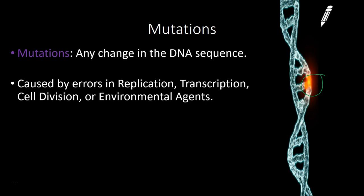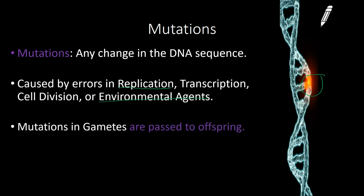It's common for mutations to occur during replication, transcription, and cell division. There are also environmental factors that could cause mutations, such as chemicals or sunlight, which can cause mutations in your skin cells. An important fact is that mutations in gametes — sperm or egg cells — are passed on to offspring and will be inherited by the new organism.